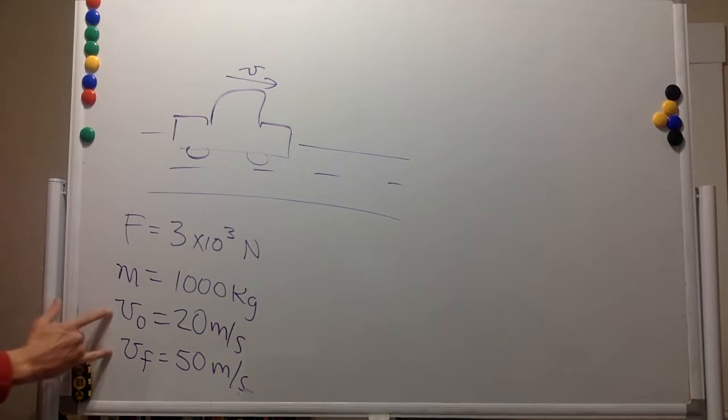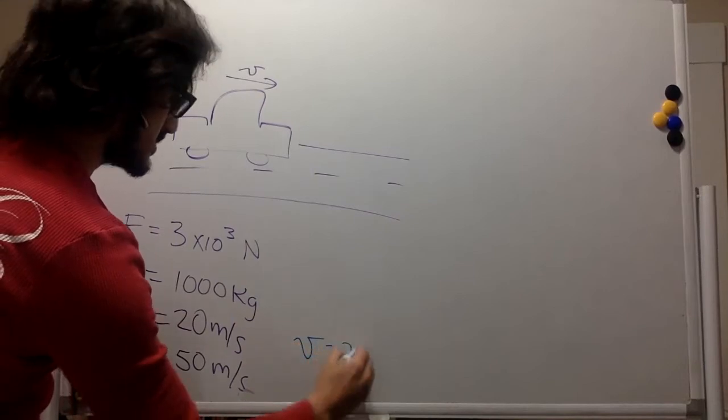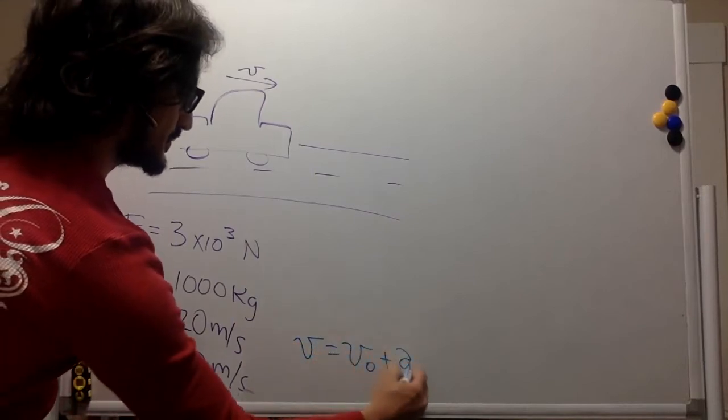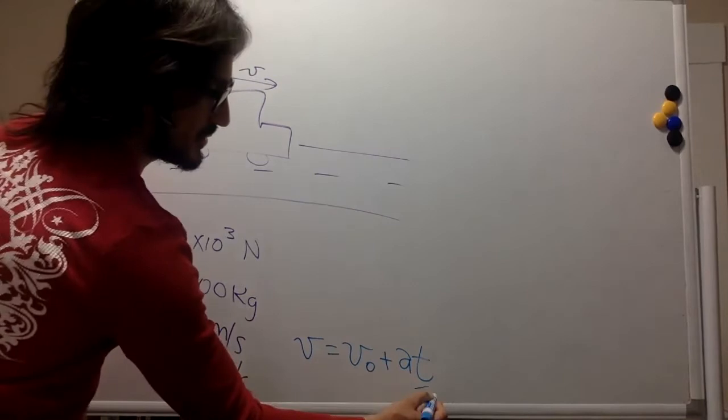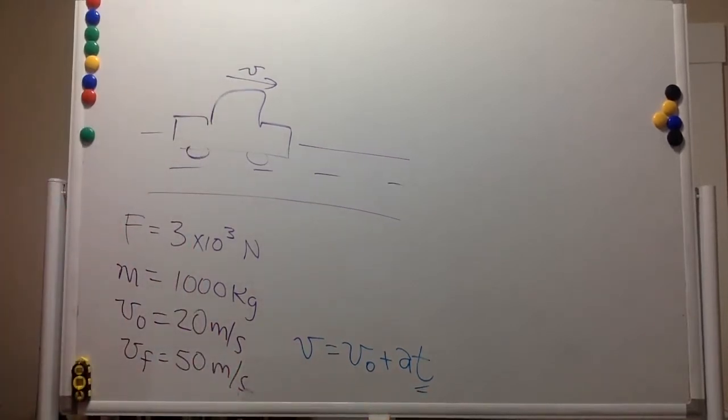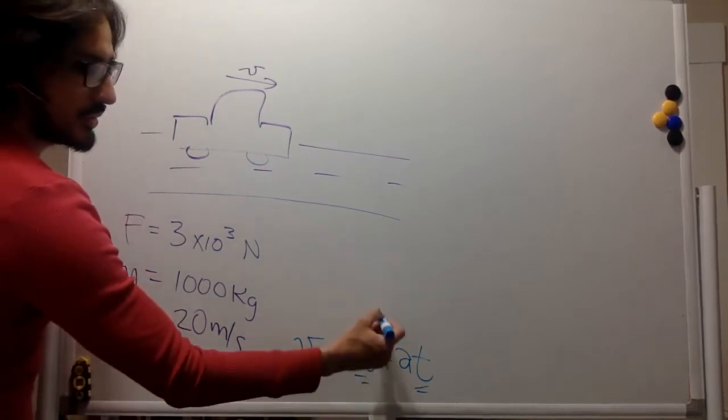Notice that we're given two velocities, and so we could use our kinematic equation. This one, since it is asking us for a time, how long, and we know the initial velocity and the final velocity, what we don't know is the acceleration.